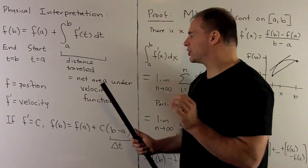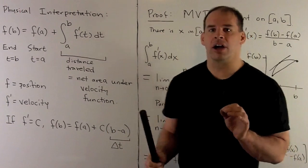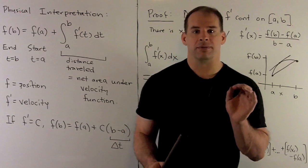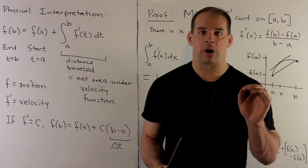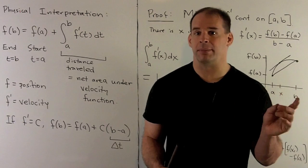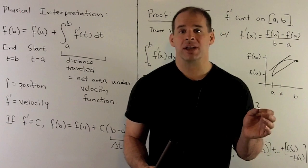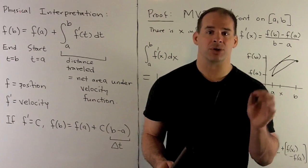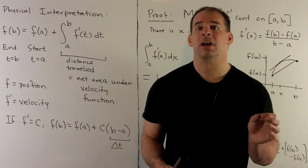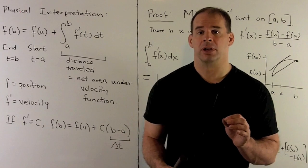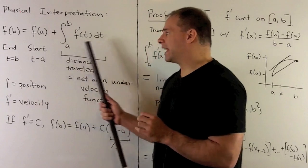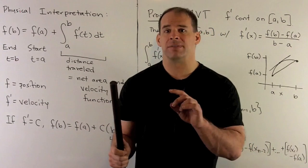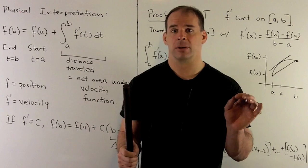If you want to know the distance traveled, that's just the net area under the graph of your velocity function. If you're traveling at a constant speed — say f prime is 50 miles per hour — and you drive for two hours, the net distance traveled equals two hours times 50 miles per hour, which is 100 miles. The Fundamental Theorem of Calculus tells you how to figure out your distance traveled when your velocity function is continuous but not so simple.